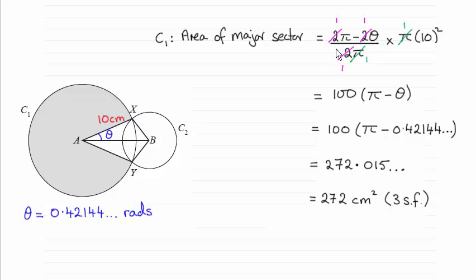This gives me the fraction of, to times the area of the complete circle, pi r squared, the radius being 10.